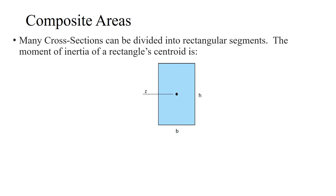Here's a rectangle — a very common shape that most cross sections can be divided into, such as I-beams, T-bars, or just a rectangle itself. The moment of inertia of a rectangle about its centroidal axis is I-bar = bh³/12, where b is parallel to the z-axis and I-bar denotes the moment of inertia about that centroidal axis.